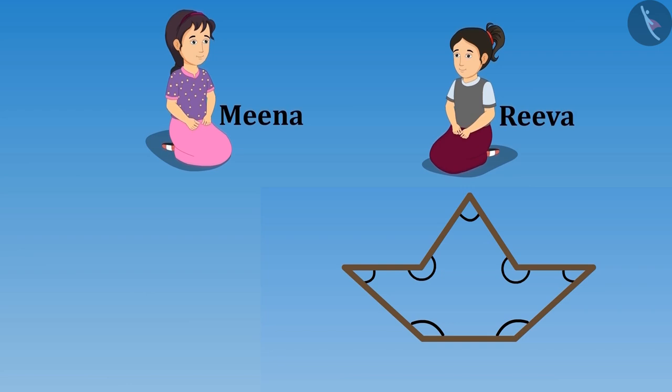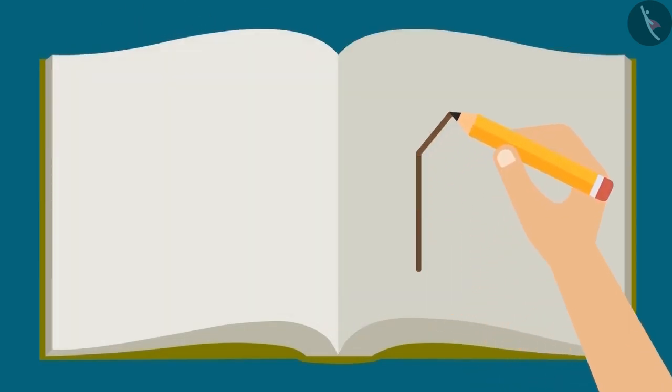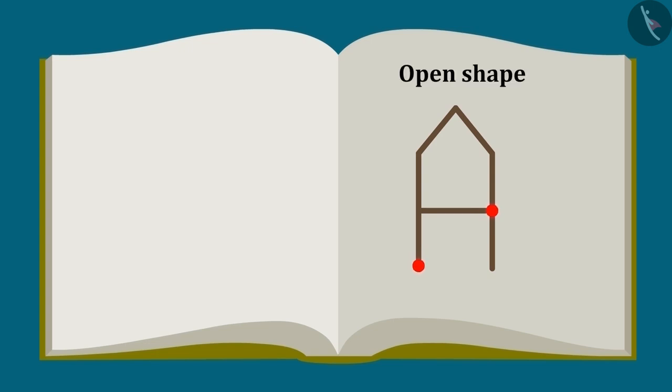Now can you change the angles in this shape and make a new shape? Riva has made this shape with those 7 sticks. Come on, let us draw this shape on paper. Did you observe that the starting point of this shape and the ending point of this shape are different? That is why this is an open shape.